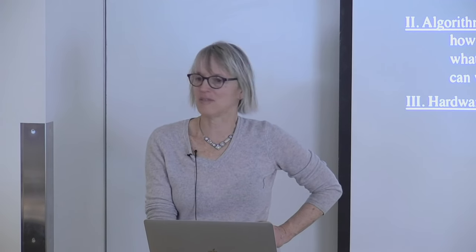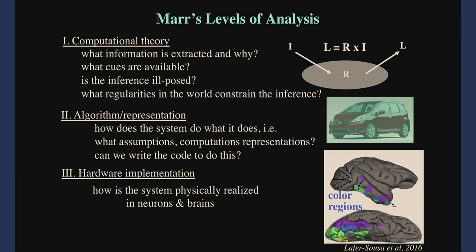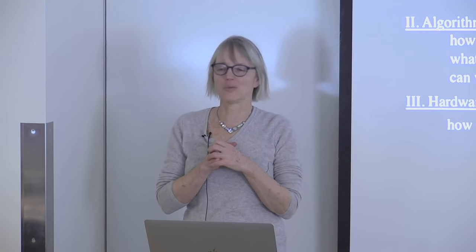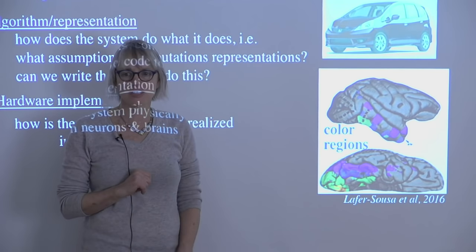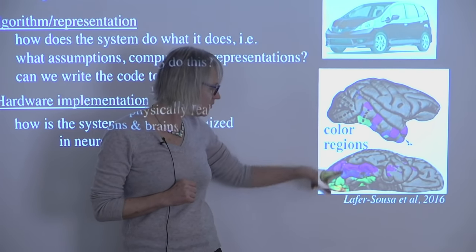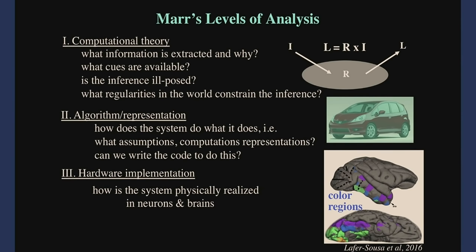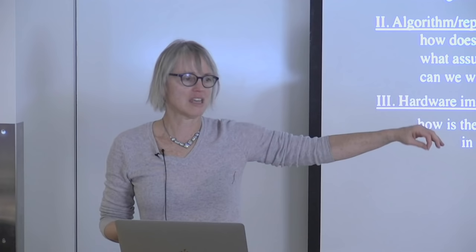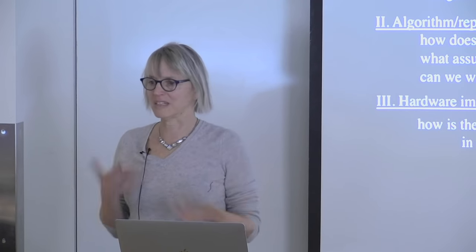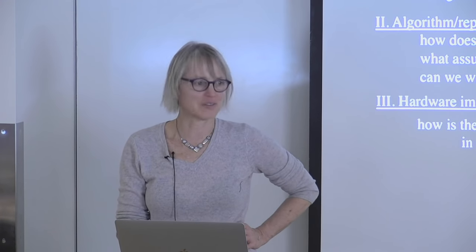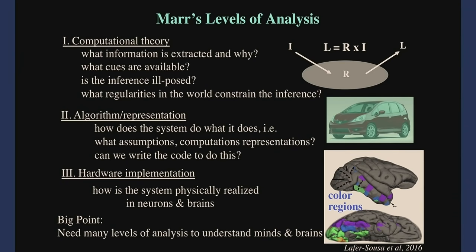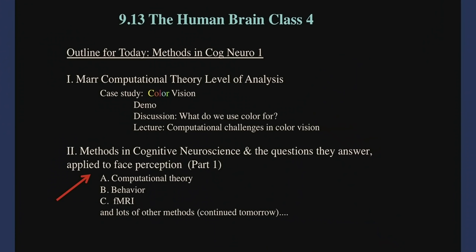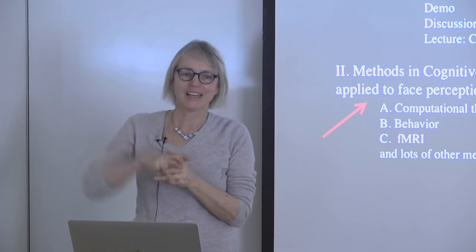The third level Marr talks about is hardware implementation — in the case of brains, that's neurons. There's lots of work on the brain basis of color vision. Rosa's work shows little blue patches on the side of the monkey brain involved in color vision, and similar patches on the bottom surface of the human brain that are particularly sensitive to color. If it's a monkey, you can stick electrodes in and record from individual neurons. We need all these levels of analysis to understand a problem like color vision.